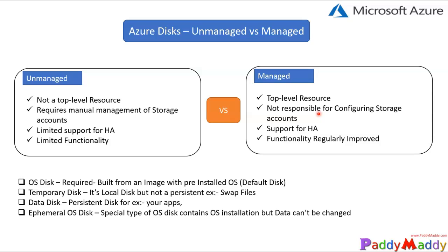Now let's talk about the types of Azure disks. There are four different types. First is the OS disk — as the name states, this is where the operating system gets installed. It's one of the mandatory disks required for your virtual machine to boot up.